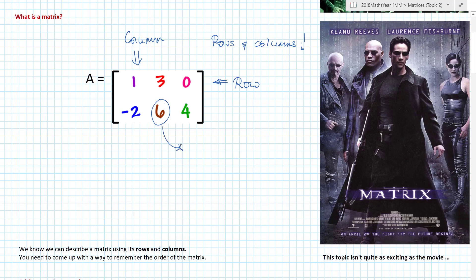Really important to know is that each individual number is called an element, and each element has a code. Matrices are generally always given a letter to define them, so that we can — much like algebra — have different things stand for different things. So let's call this matrix A. This element here would be A with a subscript R and C — the row and the column.